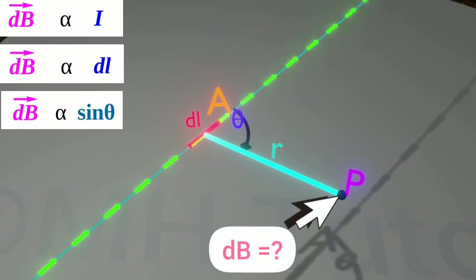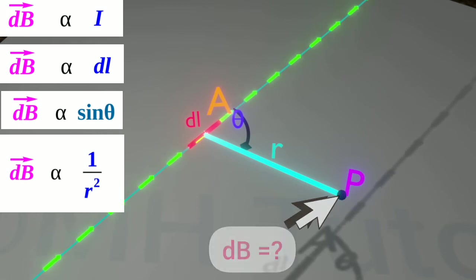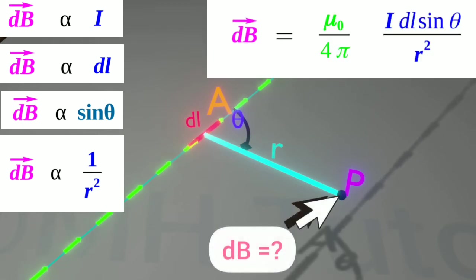R is the distance AP. And dB is inversely proportional to the square of R. Summing up all these, we get the complete scalar form of Biot-Savart law.